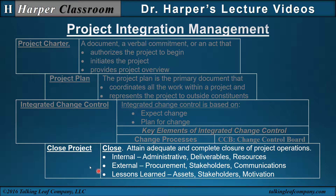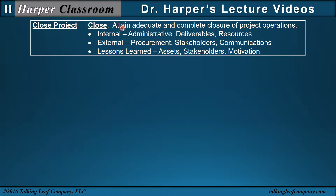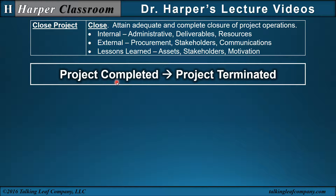Let's look at the process Close Project. Close Project attains adequate and complete closure of project operations, which includes internal, external, and the important — and sometimes overlooked — lessons learned. It's important to emphasize the difference between project completed and project terminated. Often a project is deemed completed, but it is not terminated if portions of the internal, external, and lessons learned are left undone. The process of Close Project refers to the complete termination of a project, not just a partial termination where deliverables are completed but internal, external, and lessons learned have not been totally finalized.